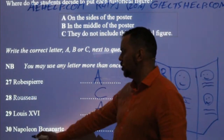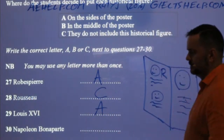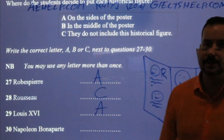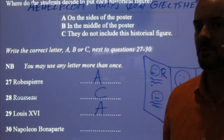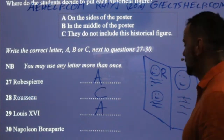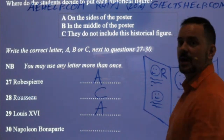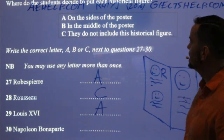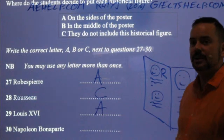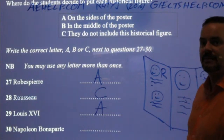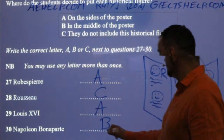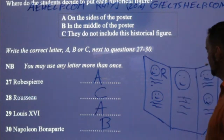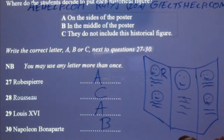And Napoleon Bonaparte — the big Napoleon. He was actually quite a small man, according to historical records. Napoleon is for number 30. He's in the middle. Napoleon was a key figure in the French Revolution, so he is in the middle. So we have Robespierre on the side, Louis on the side, and Napoleon in the middle.